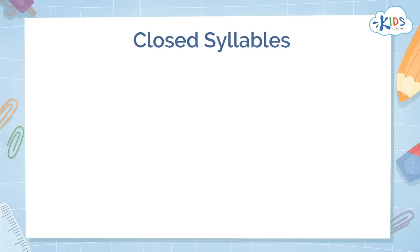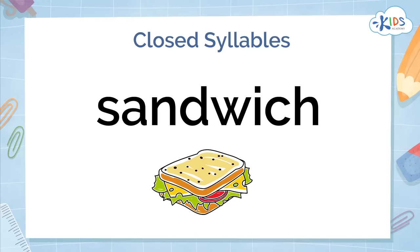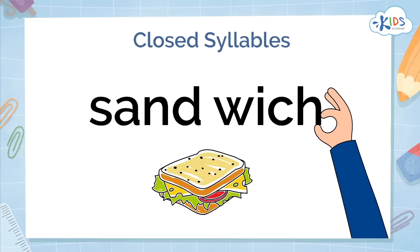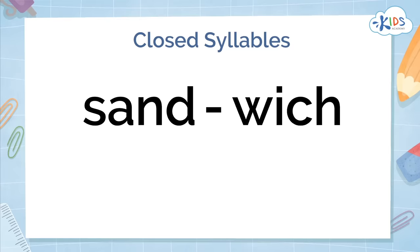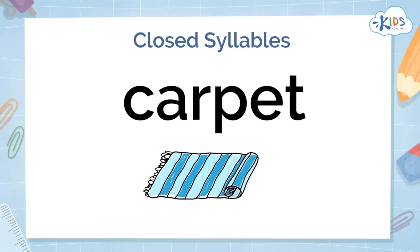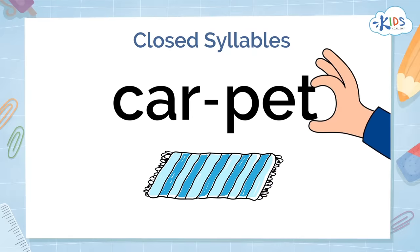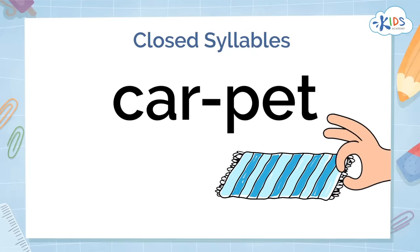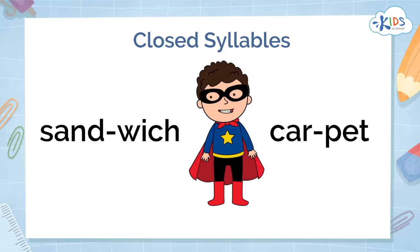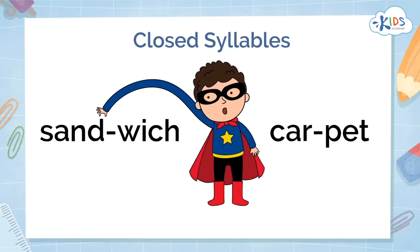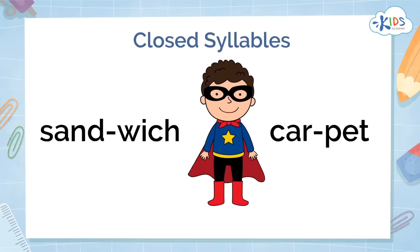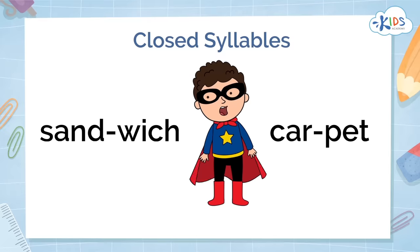Open syllables often have long vowel sounds. Closed syllables end with a consonant, like sand-wich and car-pet. The first syllables in both of those words are closed, because they end in a consonant. Closed syllables tend to have short vowel sounds.